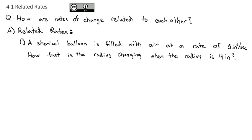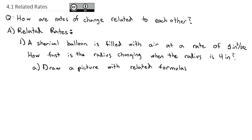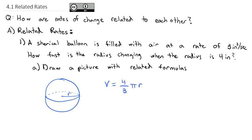As we solve these related rate problems, we're going to go through a four-step process. The first step is to draw a picture with the related formulas. We're talking about a sphere, so we'll draw our spherical balloon with radius r. We're talking specifically about the volume, and we can look up that the formula for the volume of a sphere is 4/3 π times the radius cubed.